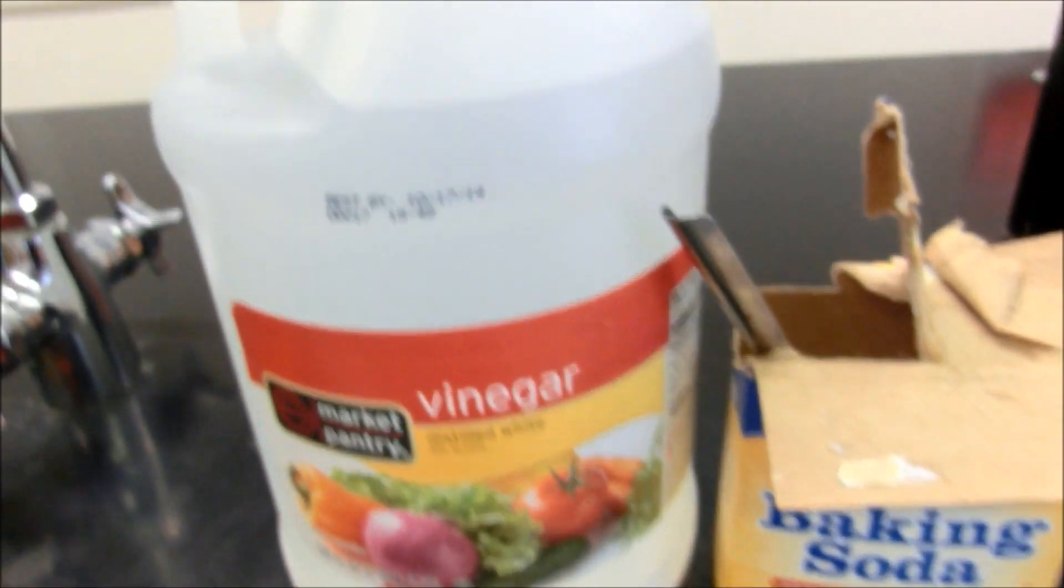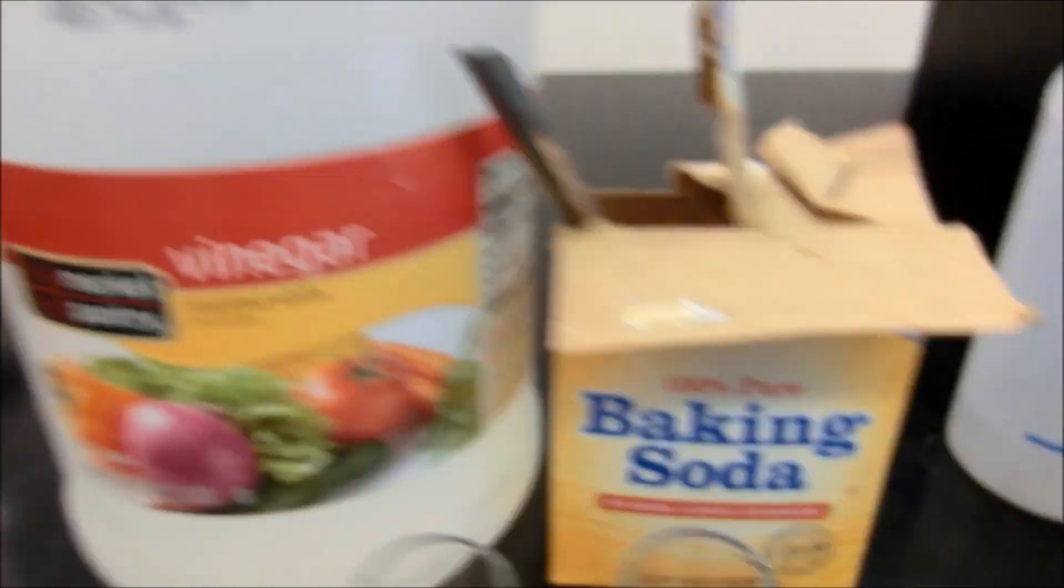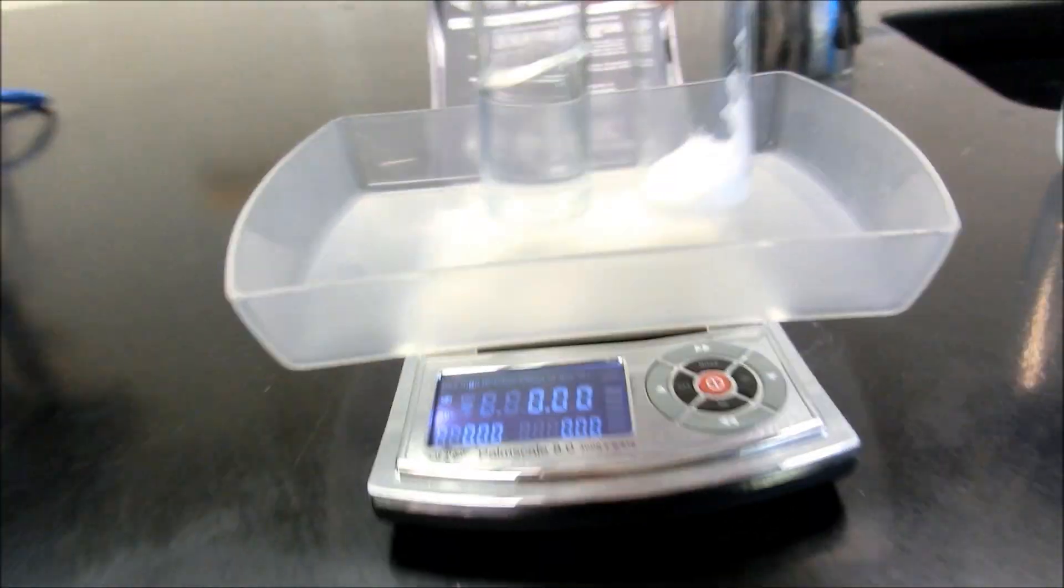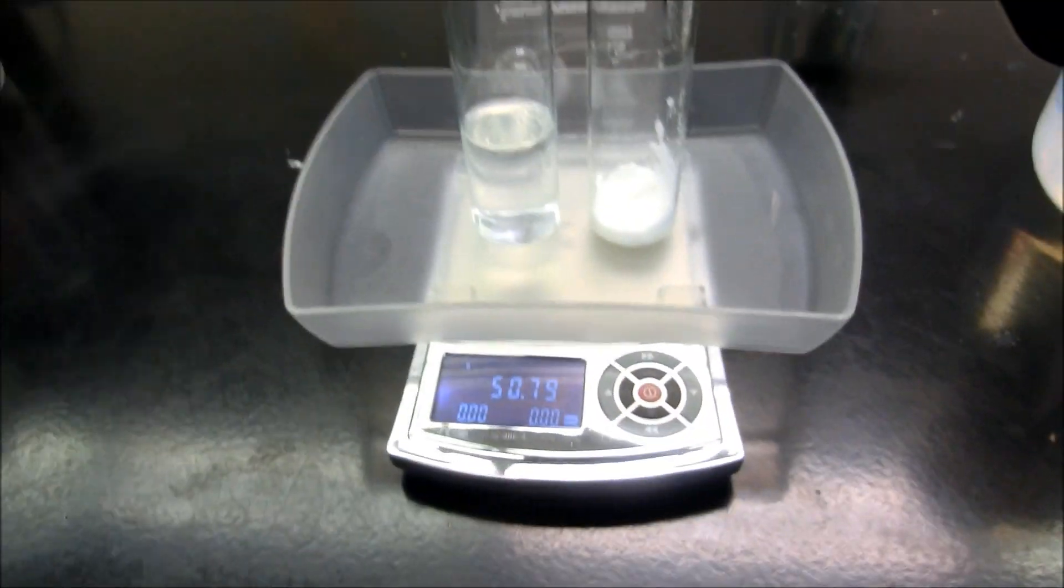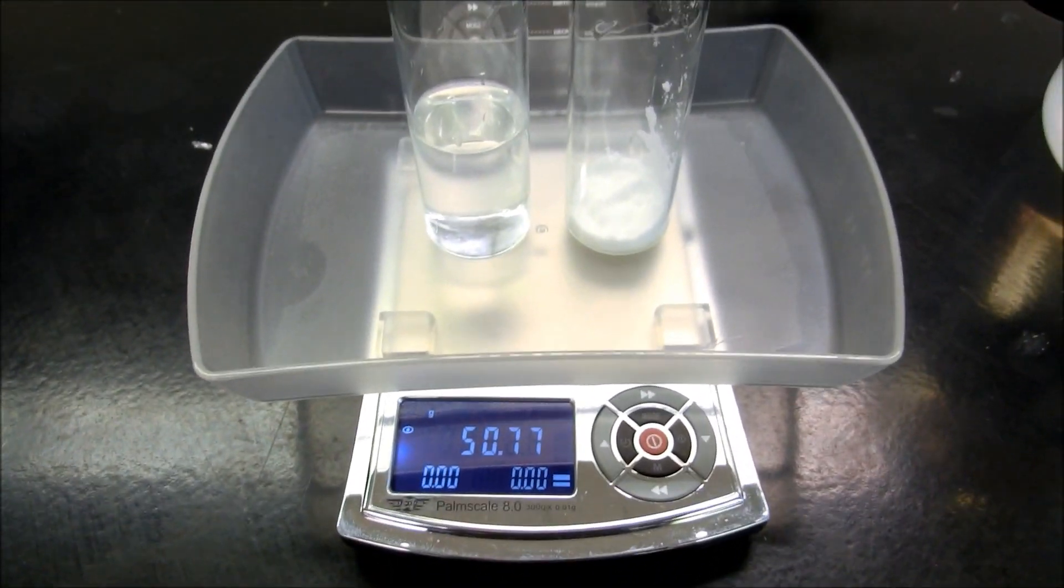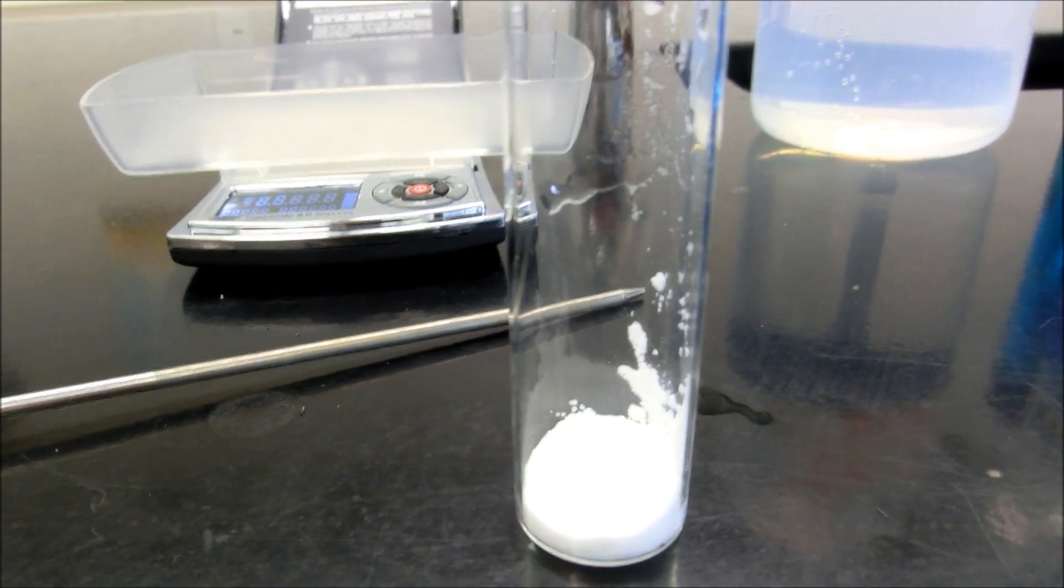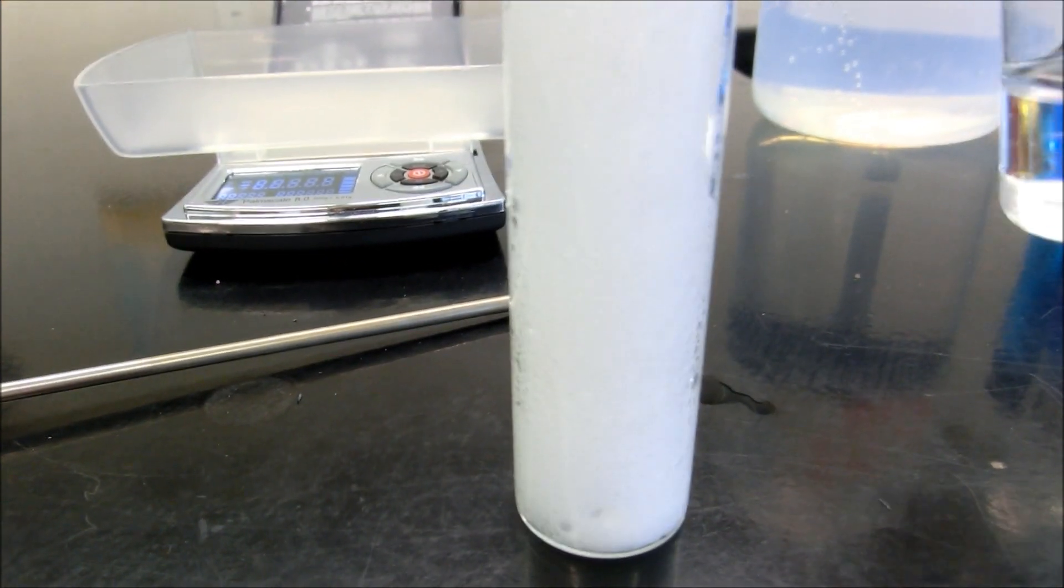Last but not least, we have vinegar, which is hydrogen acetate. We have baking soda, which is sodium bicarbonate. We put these two containers on top of the balance, and we end up having a mass of 50.77 grams. Pulling those two off. I'm going to put the vinegar into the baking soda. Oh no!